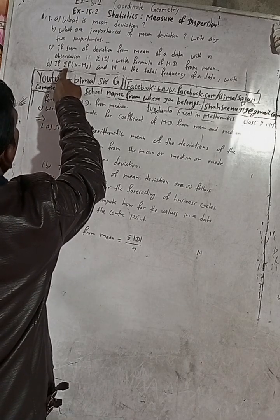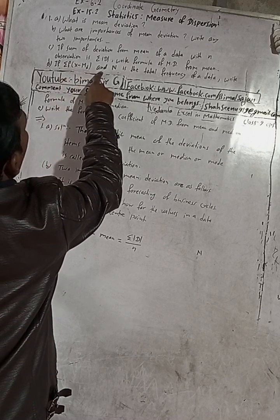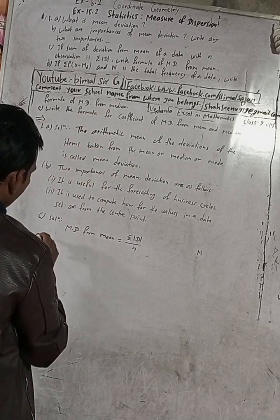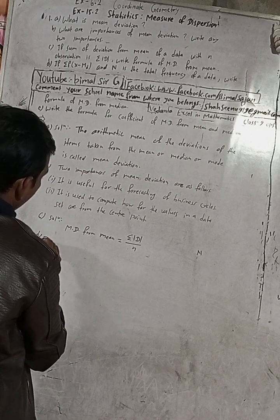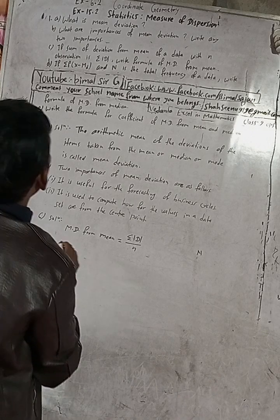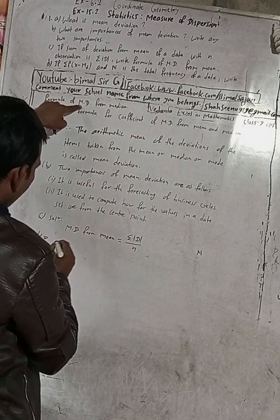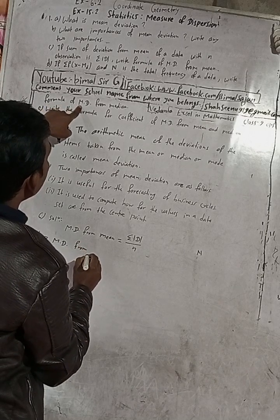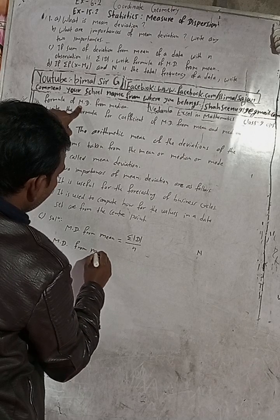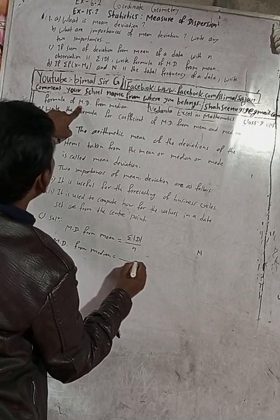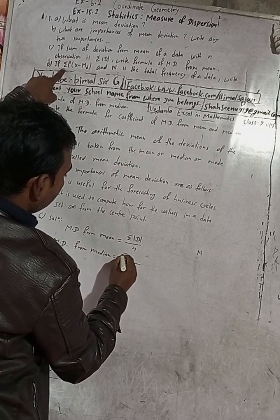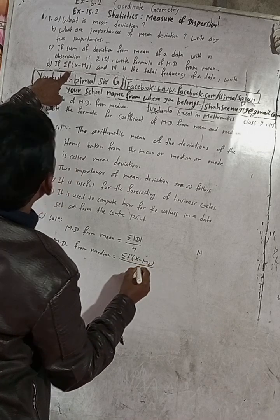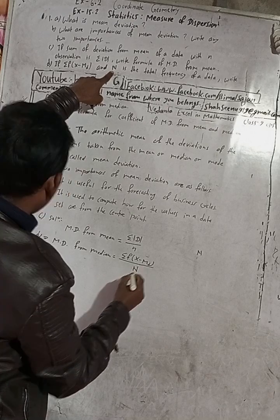Question D: formula of mean deviation from median. Mean deviation from median equals summation of F times |X minus Median| divided by capital N, where N is the total frequency. This completes question D.